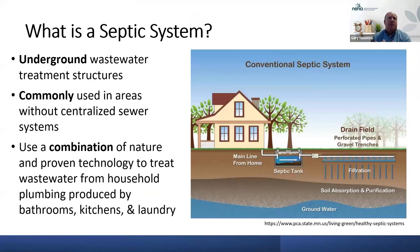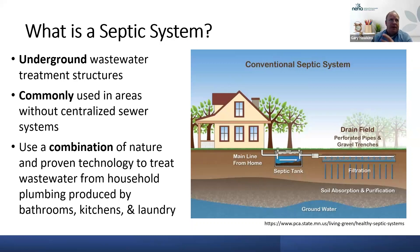What is a septic system? It is an underground wastewater treatment system or structure. That includes the piping coming from the house, the septic tank itself, a distribution box, and then the drain field with filtration of the liquid going into the ground. It's typically an all-underground system that a lot of times we don't even know is there. Commonly used in areas where centralized sewer is not available.